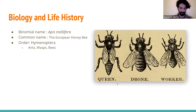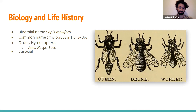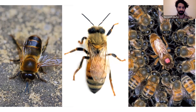Bees are a eusocial species. Eusociality means multiple generations will live together and jointly care for the brood. There's always a distinct caste system of reproductive and non-reproductive individuals. In honeybees, there are three such castes: the worker bees, the drone bees, and the queen bees. Here's a close-up view of each of those three castes.